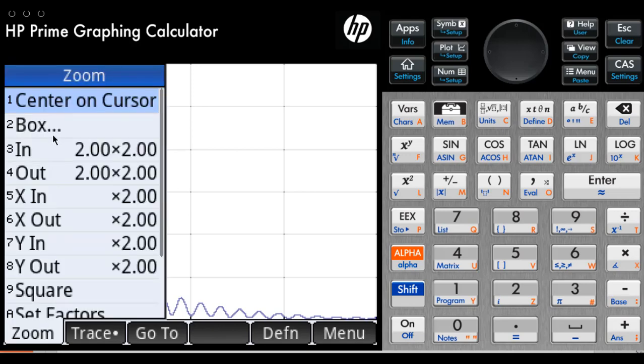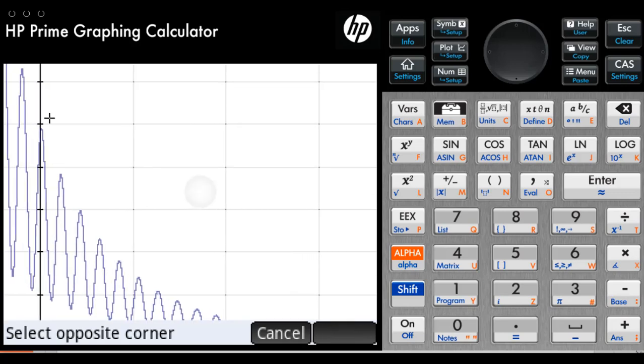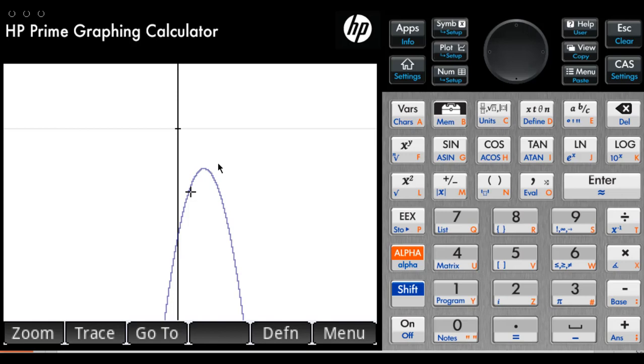Zoom. Let me select the box. Select the corner, this is one corner. OK, select the other corner. I will select, let me move that a little bit to the side, and select this point here. OK. Now I see the peak value.